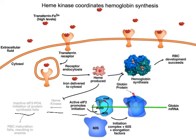The heme kinase phosphorylates EIF2 and turns it from the active form over here to the inactive form. Heme kinase itself is being regulated by the amount of heme — you can see here it's being inhibited by heme. So that's the important part of the story that I was missing.